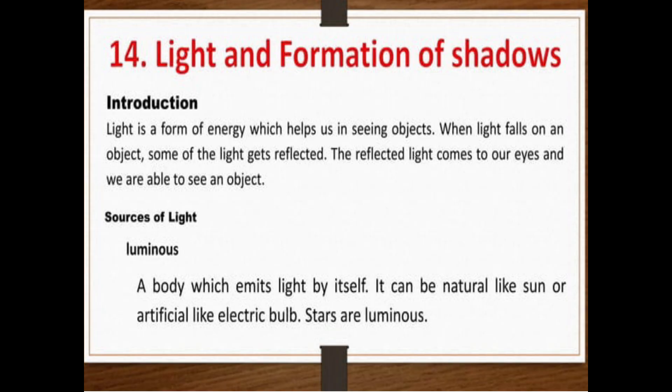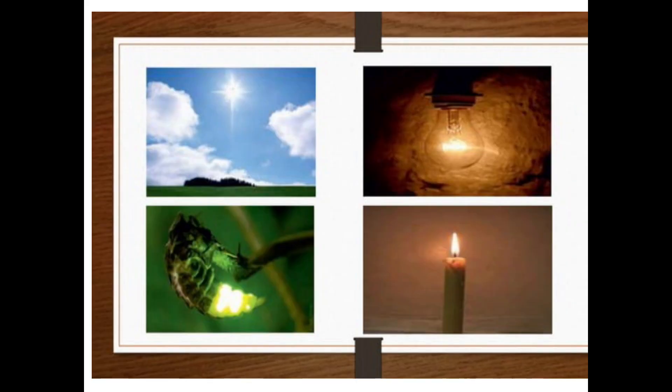First is luminous. A body which emits light by itself. It can be natural like sun or artificial like electric bulb. Stars are luminous. For example, sunlight, electric bulb, candle, etc.